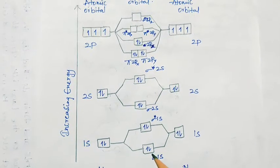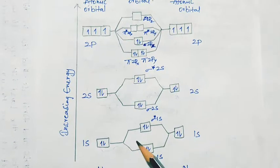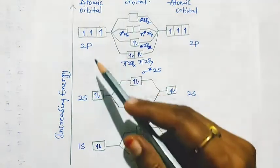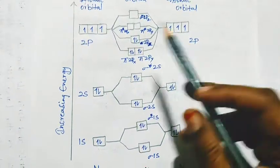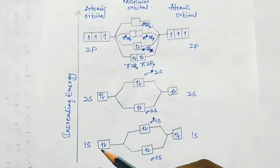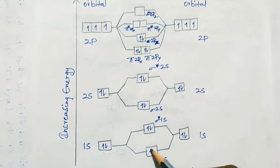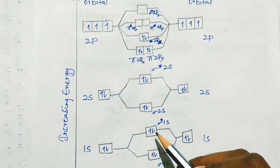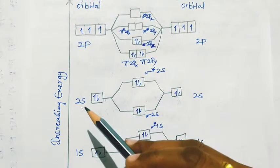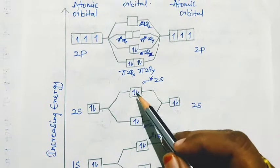After filling the bonding orbitals, the remaining electrons will enter into the antibonding orbitals. Firstly, sigma 1s — a bonding orbital — is filled with 2 electrons. Next, sigma star 1s, the antibonding orbital of the 1s orbital. Then sigma 2s, followed by sigma star 2s.